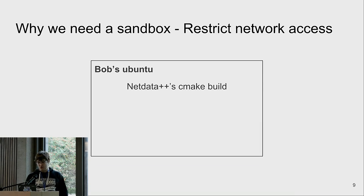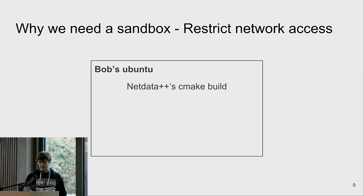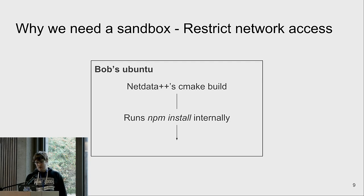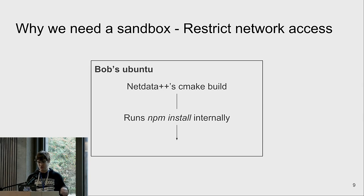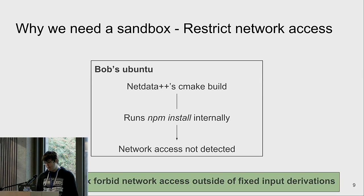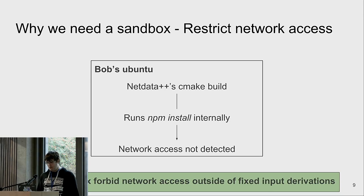It does the same thing for network access. For example, if this dashboard has some JavaScript used on a website, there's a chance it will call npm install at some point to build those JavaScript files — as is common practice these days. This sometimes went unnoticed because it's somewhere in the depth of the build system, so it's not easy to detect. A build sandbox prevents that by disallowing network access.